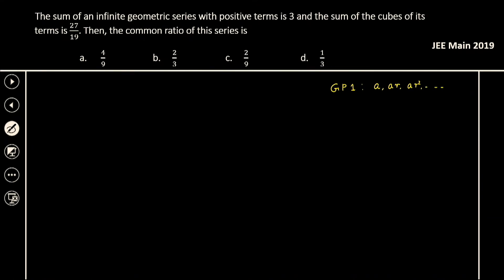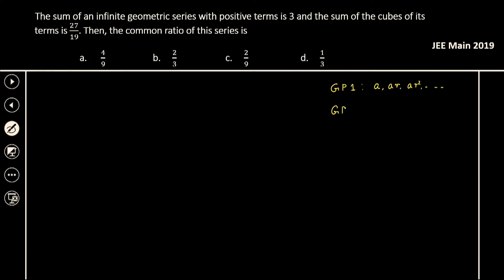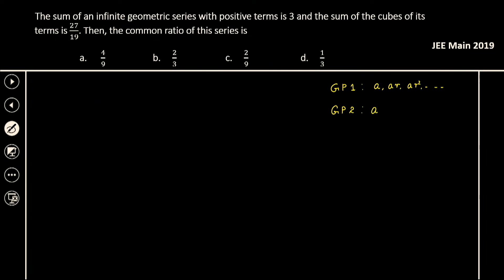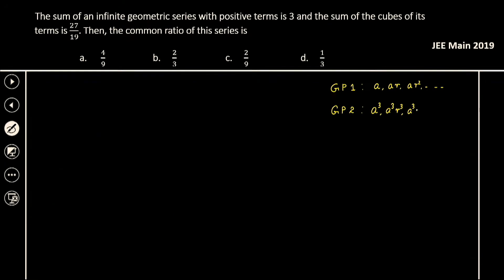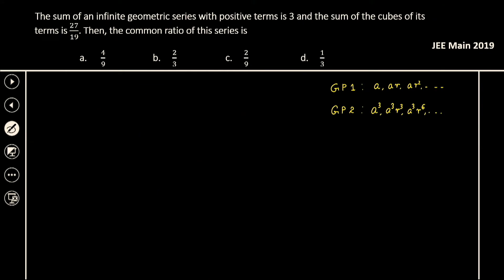Now we will have the second GP series, GP 2, that actually gives me the cube of each term. So: A³, A³·R³, A³·R⁶ and so on.